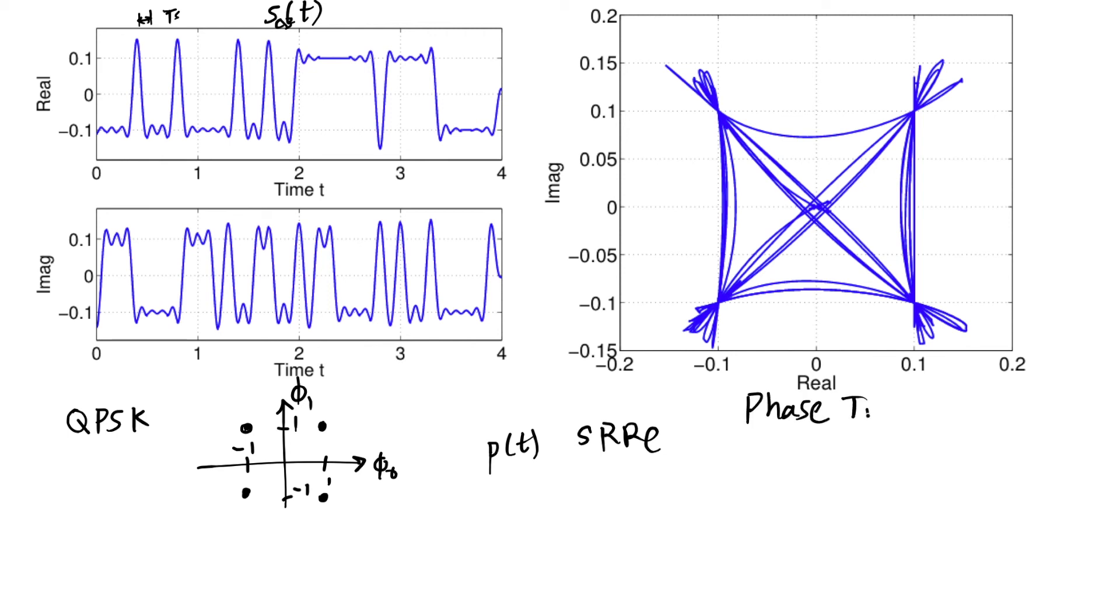The phase trajectory plot looks a lot like the constellation diagram, except that it shows lines in between the times at which our transmitted signal was at these points. And the phase trajectory plot essentially takes this complex baseband signal and it plots the real part of SCB of T on one axis, and the imaginary part of SCB of T on the other axis.